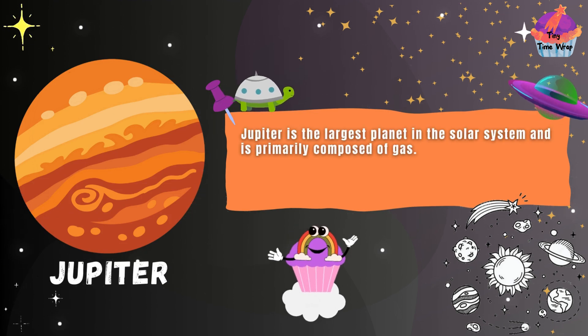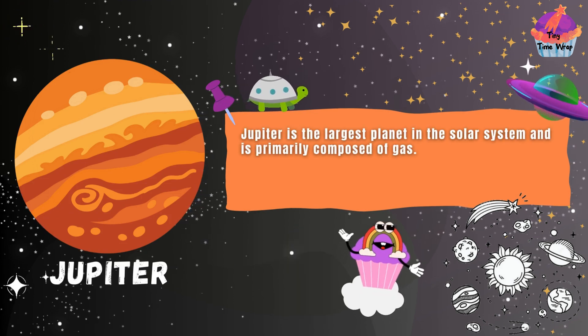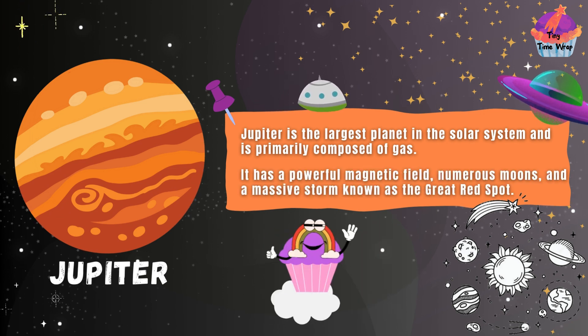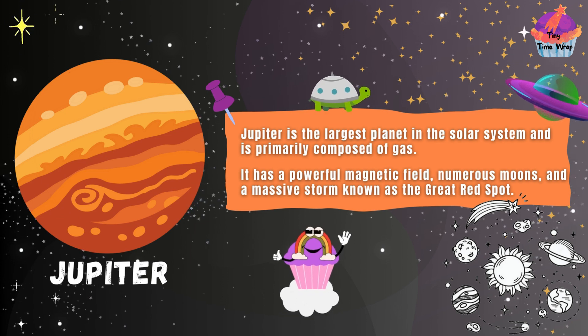Jupiter is the largest planet in the solar system and is primarily composed of gas. It has a powerful magnetic field, numerous moons, and a massive storm known as the Great Red Spot.